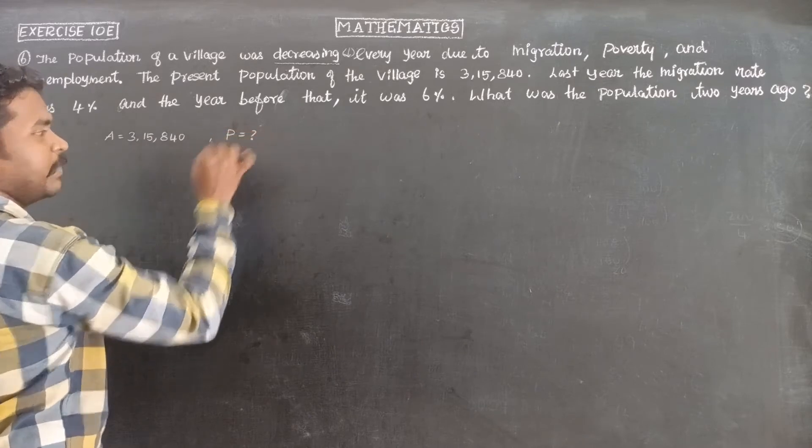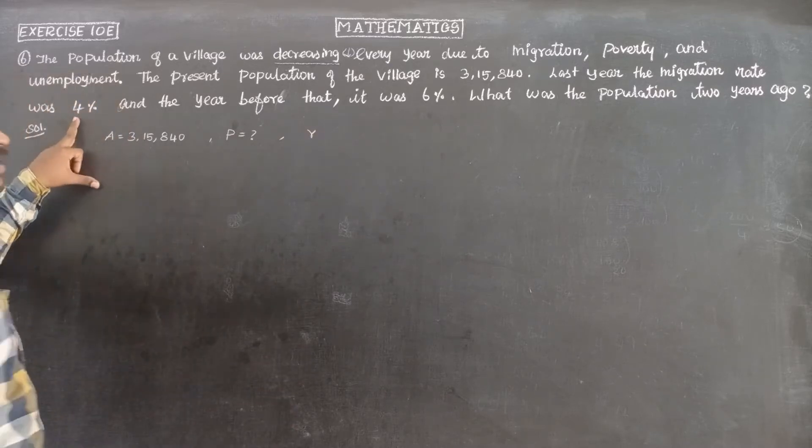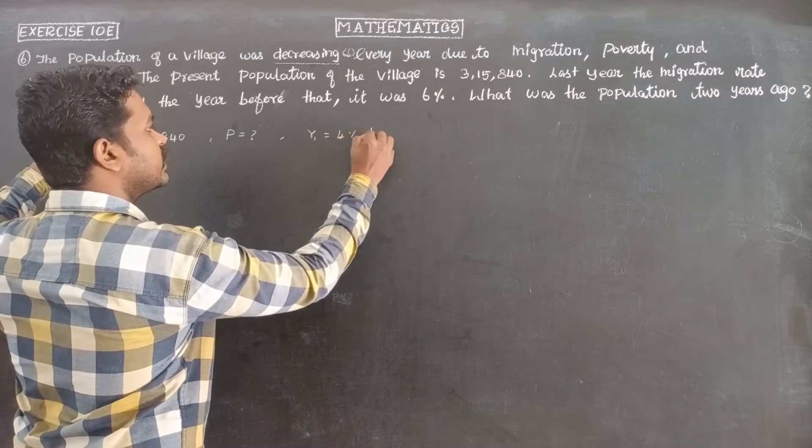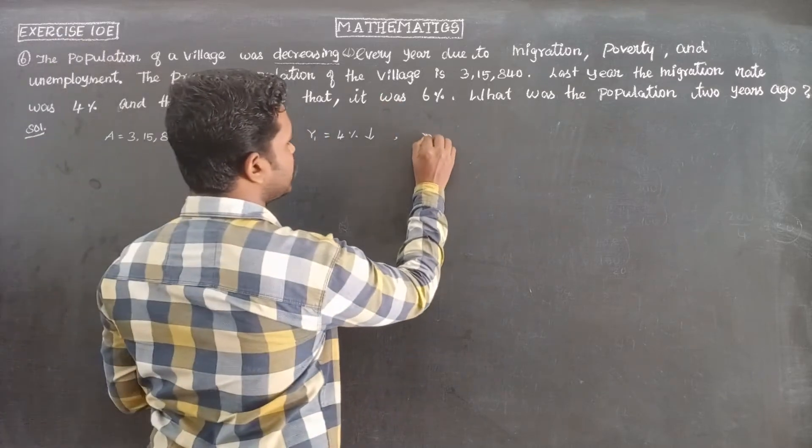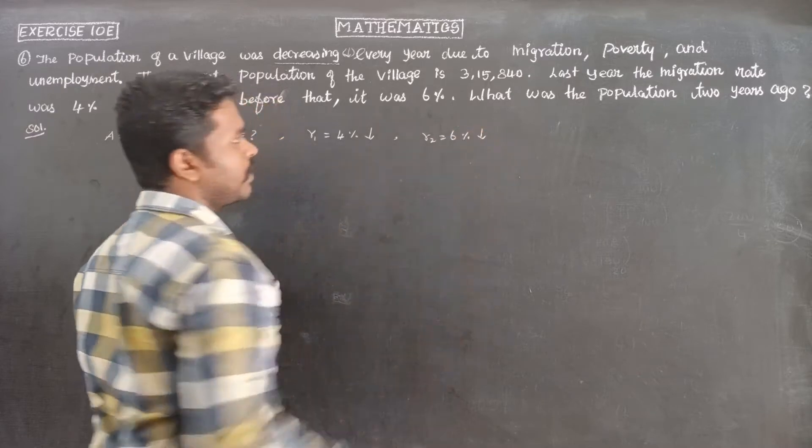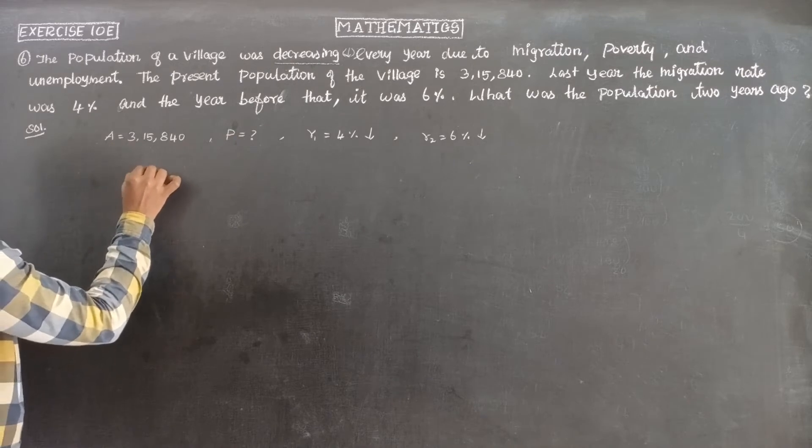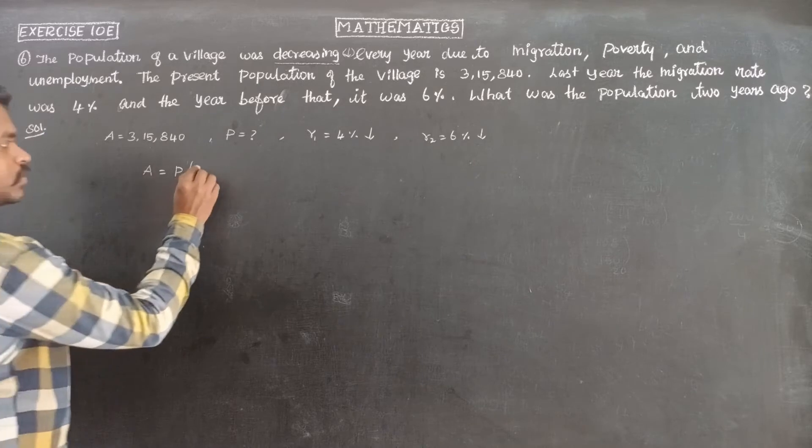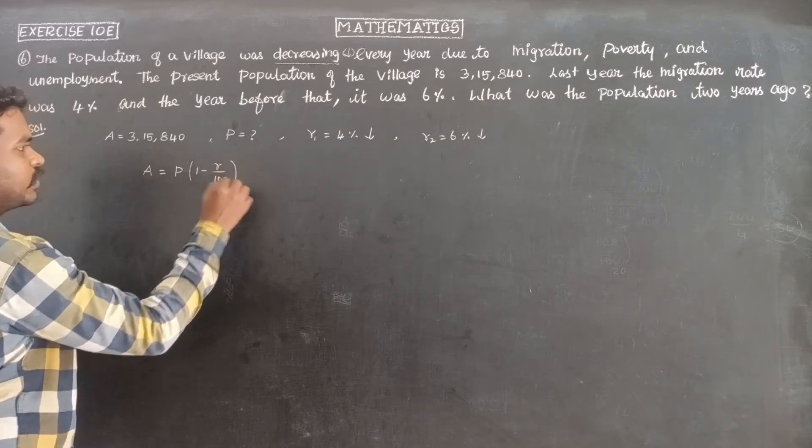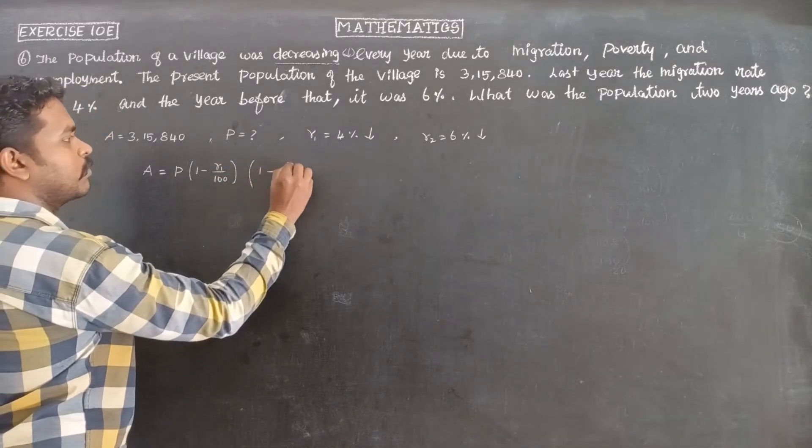And the rate: migration rate is 4%, first year R1 is 4%. And the year before, R2 is 6%. So the previous population, the principal, we need to find out. So the formula: A equals P into 1 minus R by 100. For depreciation, it's 1 minus R by 100.